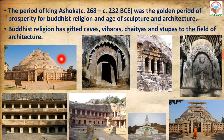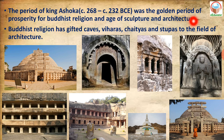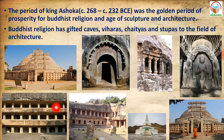Buddhist religion gifted caves, Viharas, Chetiyas and Stupas to the field of architecture. The Mauryan period of King Ashoka is known as one of the golden periods of art and architecture. Sculptures were developed during the Mauryan period, and this included the construction of different caves, Viharas — where Buddhist saints and monks used to stay — and Chetiyas.